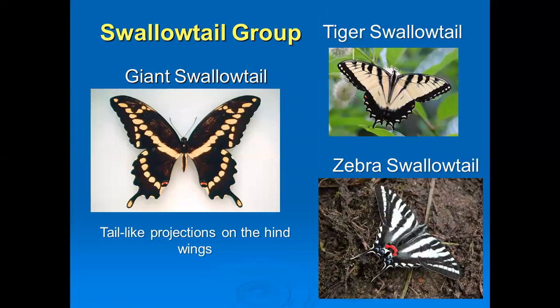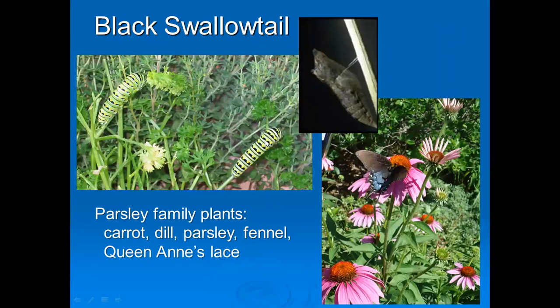Swallowtails are a huge group of butterflies. There's giant swallowtail, zebra swallowtail, pipevine swallowtail, and numerous others. They have tail-like projections — see these little projections here — that's how you can tell they're swallowtails. This is the black swallowtail larva. They like the parsley family plants to chew on: carrot, dill, parsley, fennel. A weed that they like is Queen Anne's Lace. These have rather flat, humble flowers, and the butterflies like those flowers.